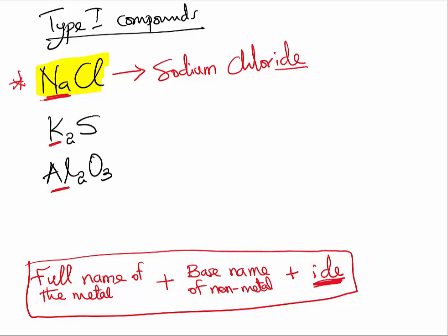We do not need to count how many atoms. We do not need to do anything. All we need to do to name Type 1 compounds is simply follow the format. So if we want to name the second compound here, the name of the metal is potassium. Then we will write just a little name of the non-metal, which is normally sulfo, so we will write it as sulf so that we can end the name with IDE.